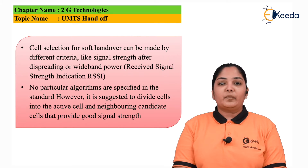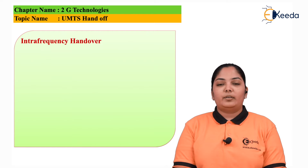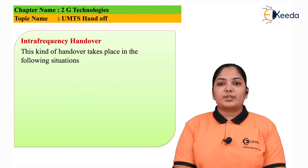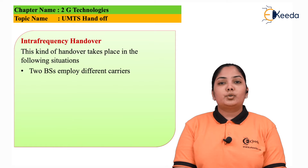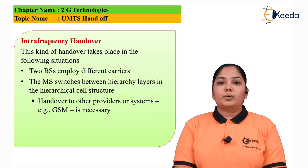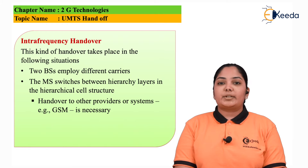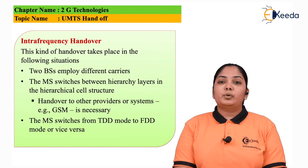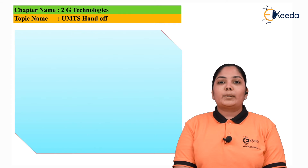The second type is interfrequency handoff, which takes place in situations where the frequency has to be changed. Maybe the two base stations employ different carrier frequencies, requiring an interfrequency handoff. Or it could be a handover to another provider system — for example, from UMTS to GSM — where the frequency will change. Or the mobile station is switching from TDD mode to FDD mode, or vice versa.